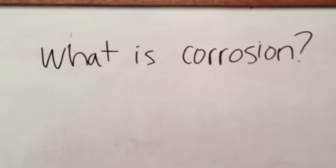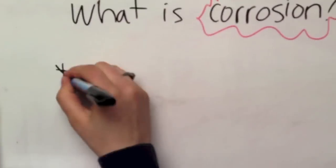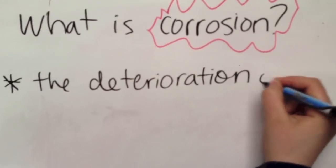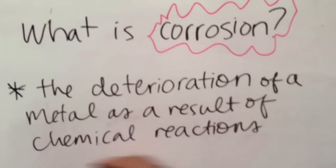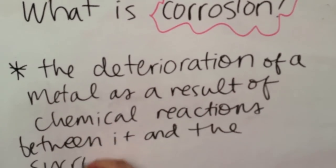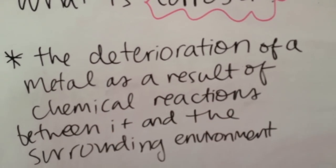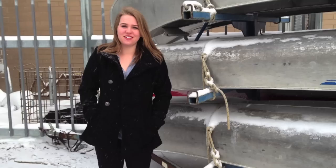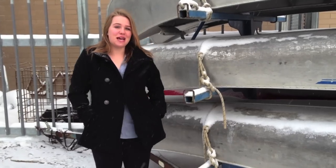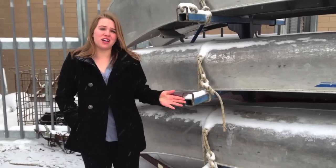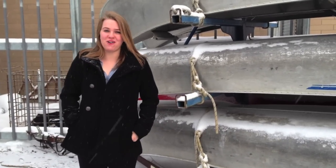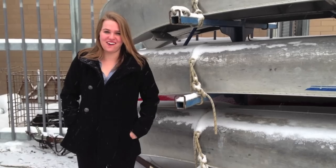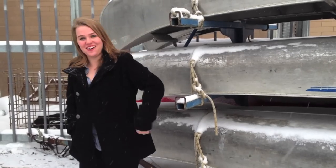What is corrosion? The deterioration of a metal as a result of chemical reactions between it and the surrounding environment. For example, rust, which we'll find out more about right now. Let's go!